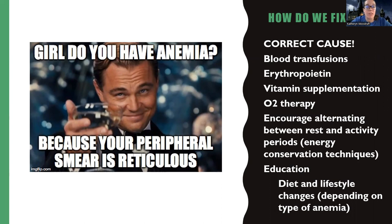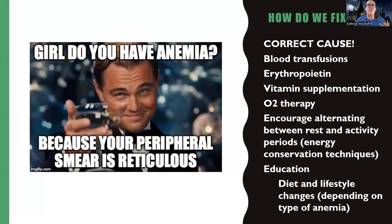Not everyone is going to need a blood transfusion. Normally we don't replace blood unless hemoglobin is less than seven or if they're symptomatic. We're going to replace whatever vitamins are missing, they may need oxygen therapy to help meet demand, and we're going to teach what's called energy conservation techniques — balancing rest and activity — because these patients don't have enough supply to do their regular activities. They may need more breaks. Overall, we'll teach them about diet and lifestyle changes depending on which type of anemia they have.